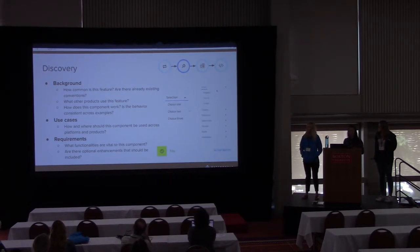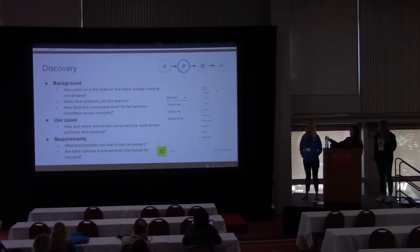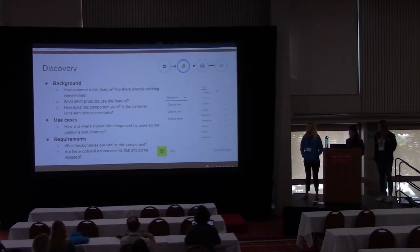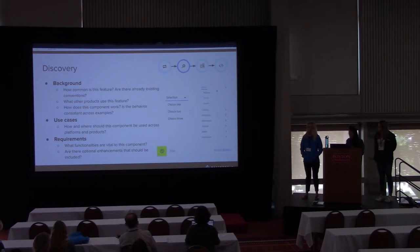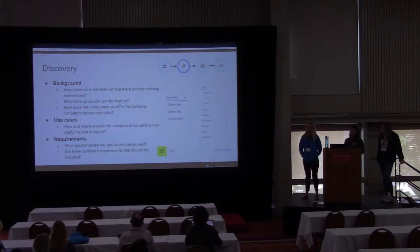After digging in further, we come up with requirements so we have a vision going forward with the component. It's important to consider which functionalities are non-negotiable and which enhancements should be included. For example with an alert, we might say a title and description are required, but enhancements might include allowing people to change the color, the icon, adding a call to action, a dismiss button, or changing the time before the alert dismisses. The cool thing about being open source is that we can host a variety of channels for these discussions, available for the community to participate in.